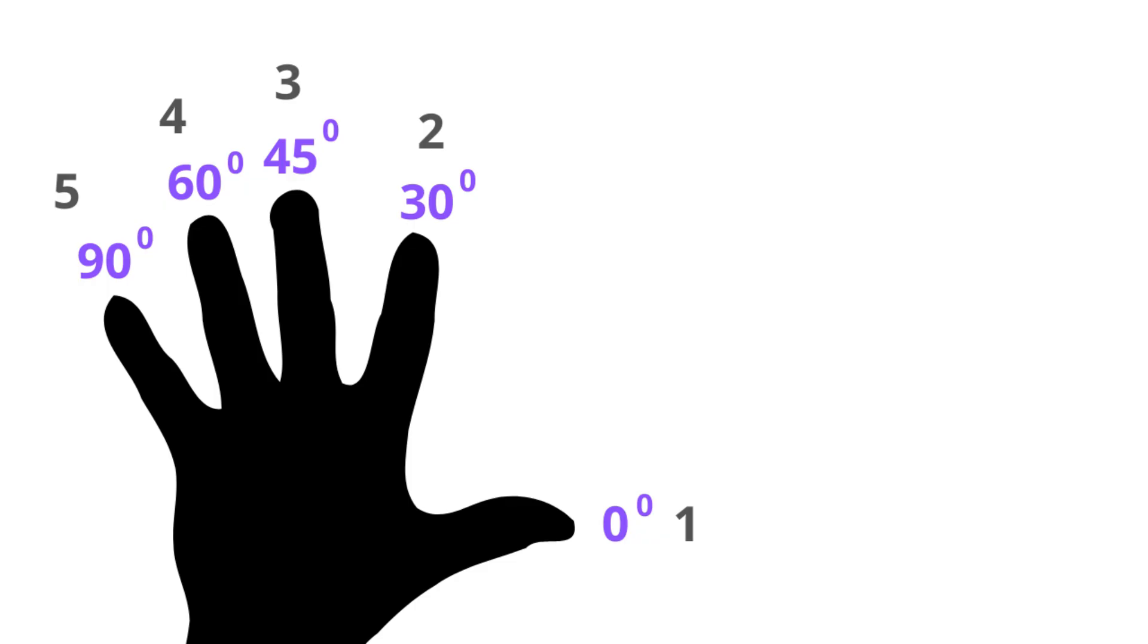Now let's say you have to work out sine of 30 degrees. This is the finger for 30 degrees. Now we count the fingers to the right from here. We have one finger. Then take the square root of 1 which is also 1 and divide it by 2. This is the answer. Pretty cool huh?